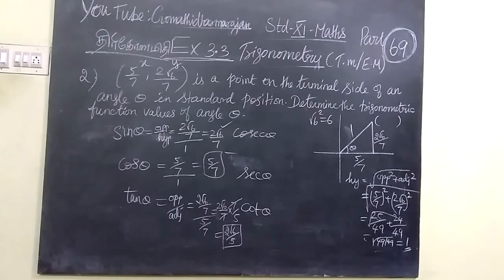Now, we are seeing the reciprocals. 2 root 6 by 7, correct? 5 by 7, okay. Then, after that, 2 root 6 by 5.